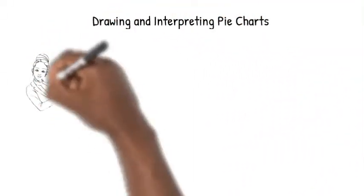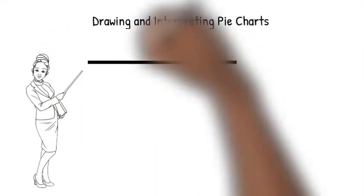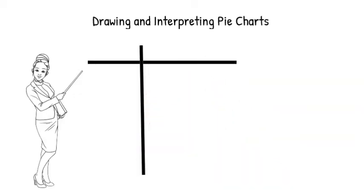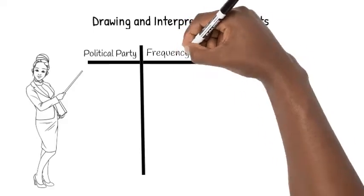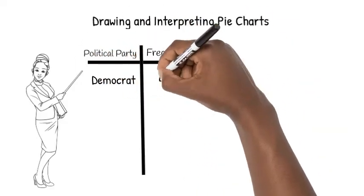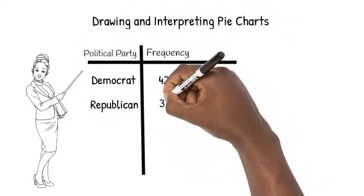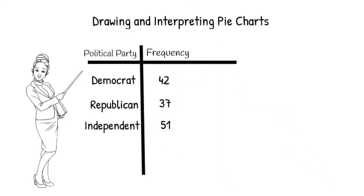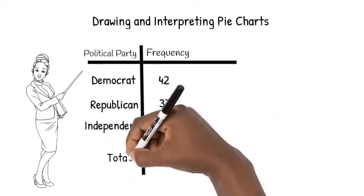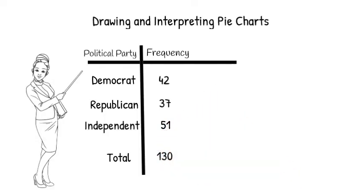In this video, we'll be looking at how to draw and interpret pie charts. Let's say we conducted a survey asking voters at random what is their political party. 42 people say that they are Democrat, 37 say that they are Republican, and 51 say that they are Independent. When we add the frequencies, we get the total number of people surveyed.